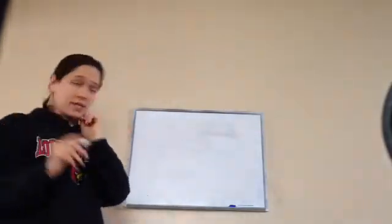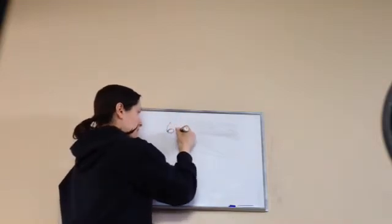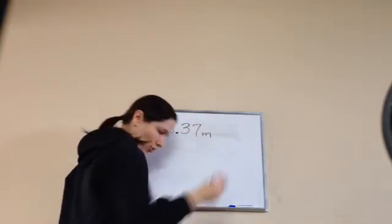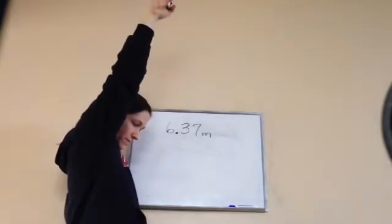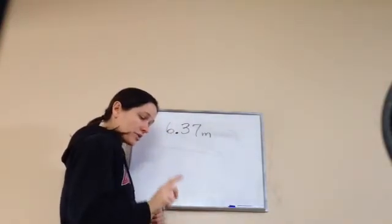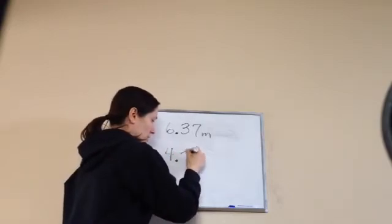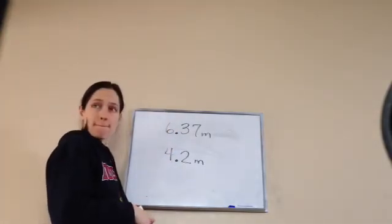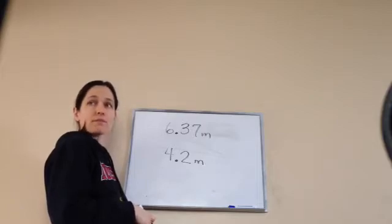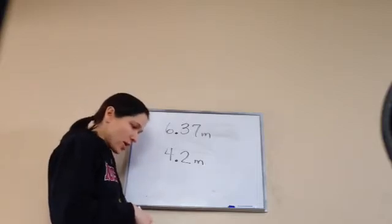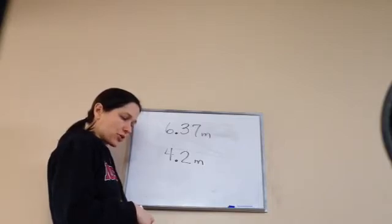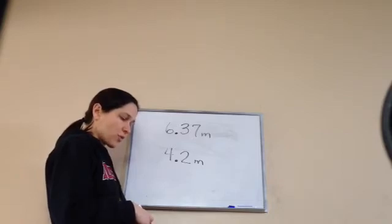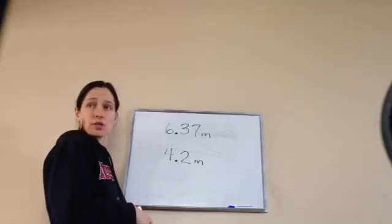Alright, listen to this and I want you to work it. The roof was 6.37 meters above the ground. Okay. The ladder could only reach 4.2 meters. The roof is how much higher than the ladder could reach? What would you do? Let me read the problem again. The roof was 6.37 meters above the ground. The ladder could reach only 4.2 meters. The roof was how much higher than the ladder could reach? I guess you could subtract.